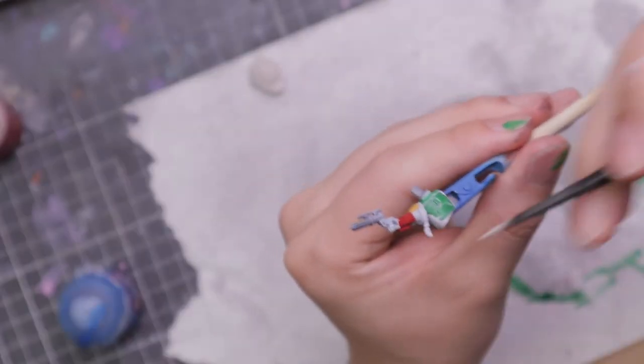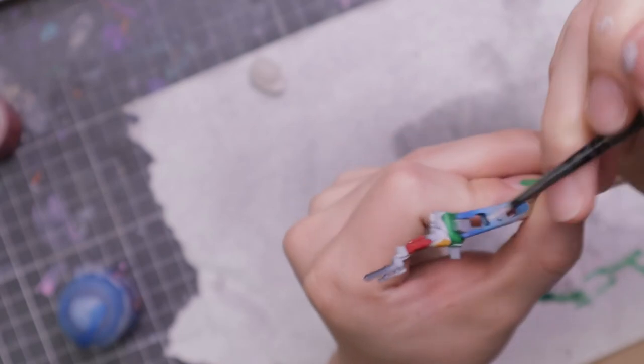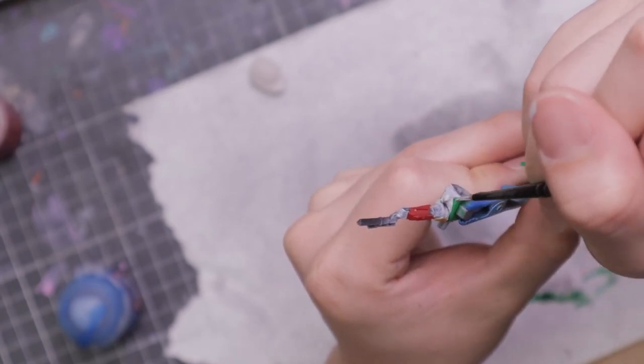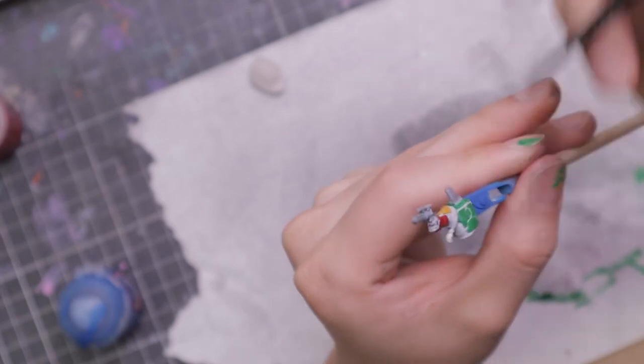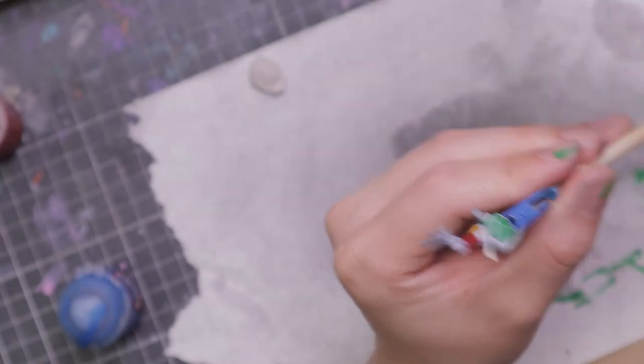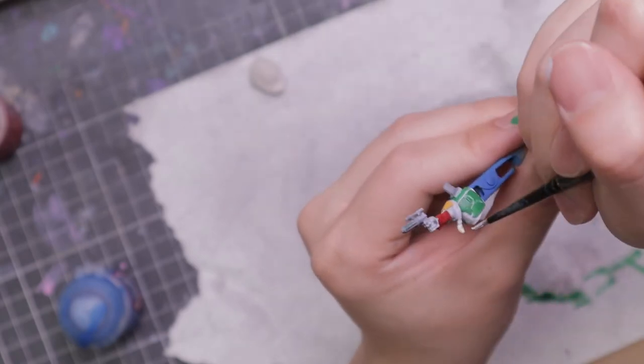Using an off white, I'm going to paint the rope. I'm just going to lightly dab it on because it's meant to be a little bit translucent. I'm not too fussed about getting perfect coverage.